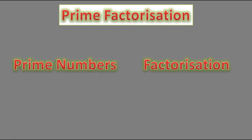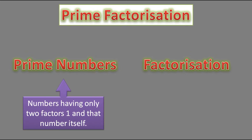If you don't know anything about prime numbers, you can go to one of my videos where I have explained about prime numbers in detail. The link is there in the description. Here, I will give you a brief definition of prime numbers: numbers having only two factors — one and that number itself — are called prime numbers.